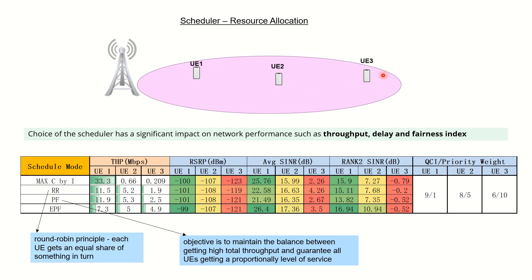UE 3 is even worse because the signal quality — specifically the CQI — has a direct impact on MCS, so MCS would be very low. The number of bits transmitted per OFDM symbol would be very few. So even if we allocate equal resources to UE 3 as compared to UE 1, the achievable throughput is still not up to the mark.